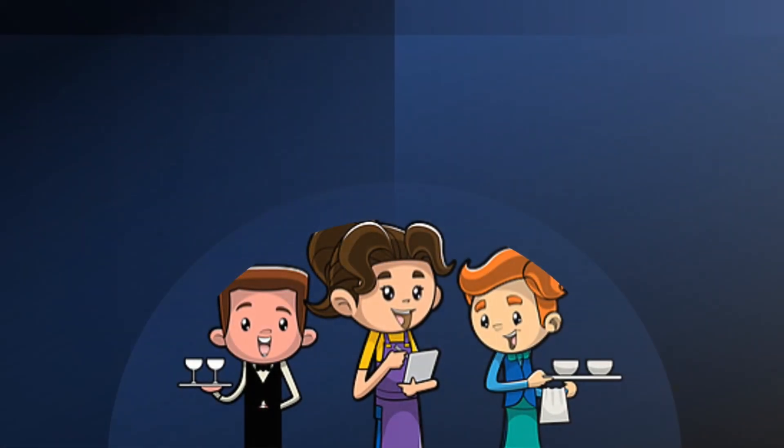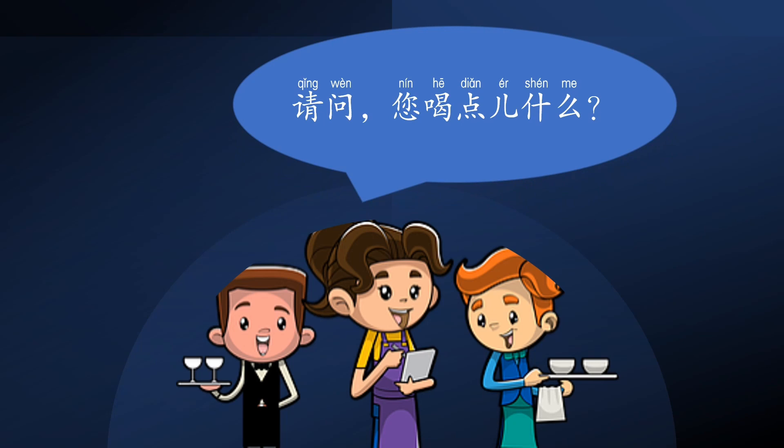请问，您喝点什么? Are you familiar with this question? When you get into a restaurant, this will be the question that the waiter or waitress will ask you. 请问 is a polite word to begin a question — it means 'May I ask.' 您喝点什么 means 'What would you like to drink?' And 喝 means 'to drink.'